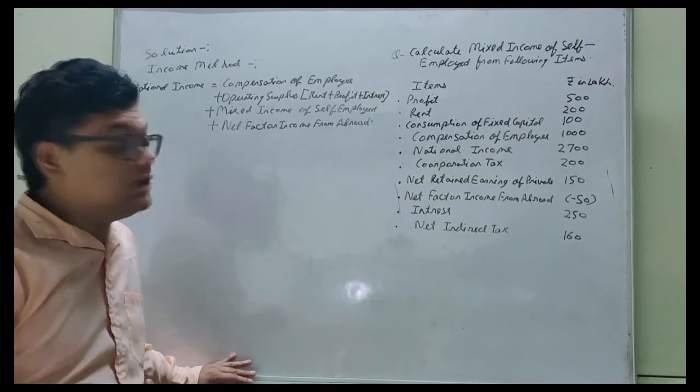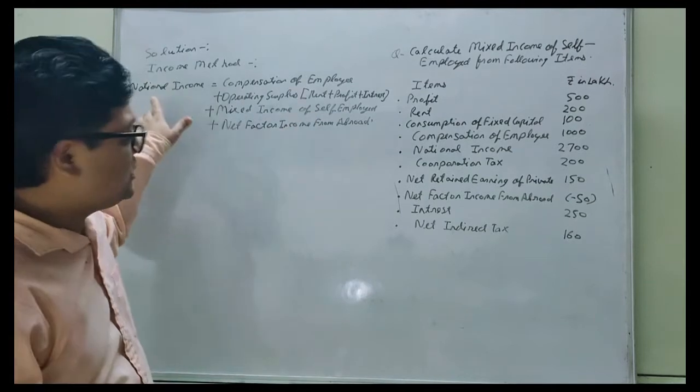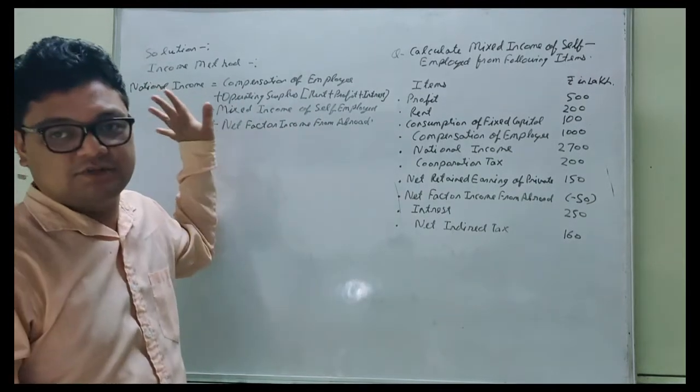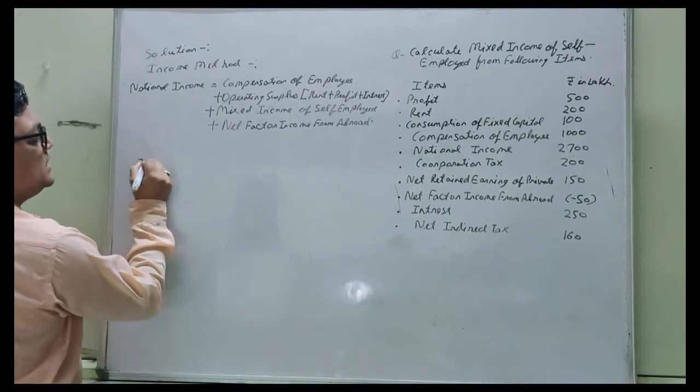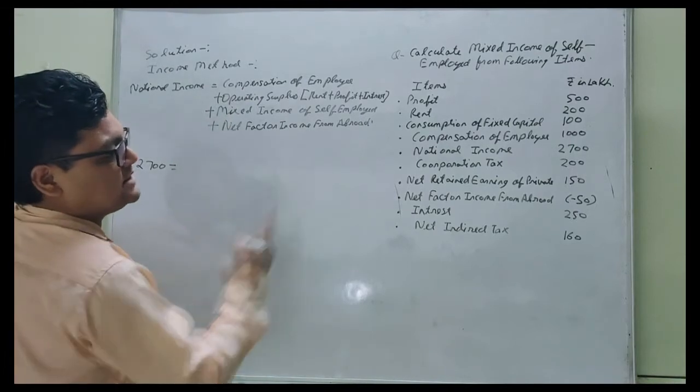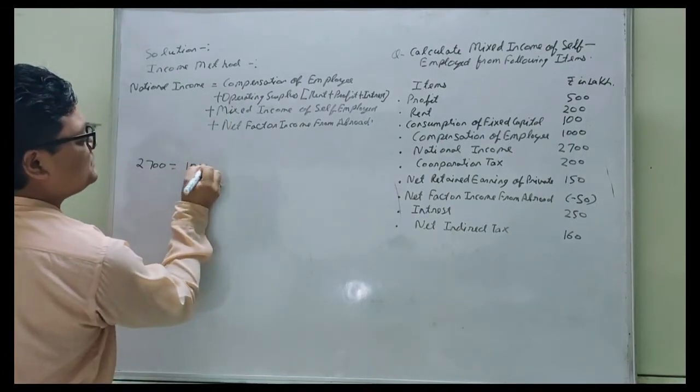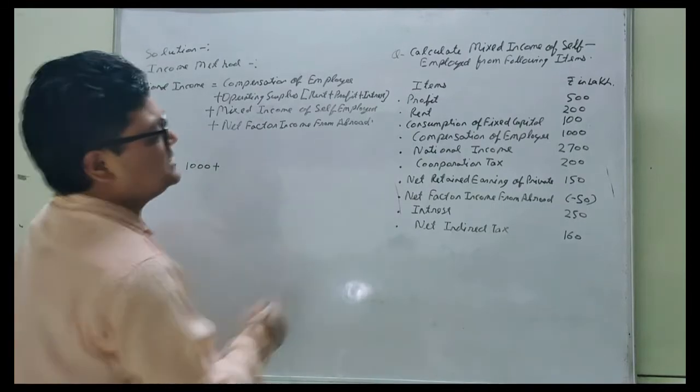Now, we have to calculate mixed income of self-employed. In the question, national income is given. So now we will write: national income is 2700. 2700 equals compensation of employees, which is given as 1000, plus operating surplus.